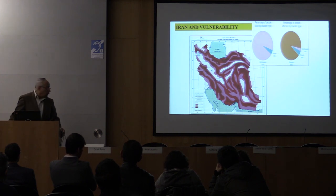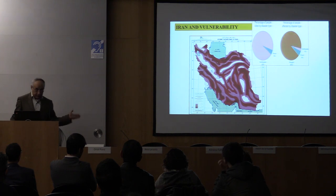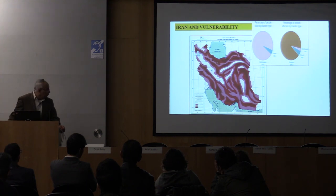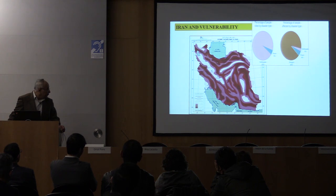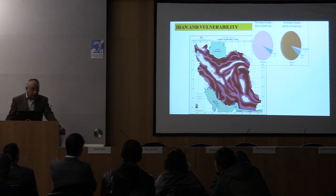It is actually fortunate in one sense, because we have many, many gas and oil reservations because of this fault line. But at the same time we are suffering from earthquakes. If you look at the diagram on the right-hand side, you can see the number of fatalities from earthquakes compared to flooding and other causes. So earthquake in Iran is a serious problem and threat.